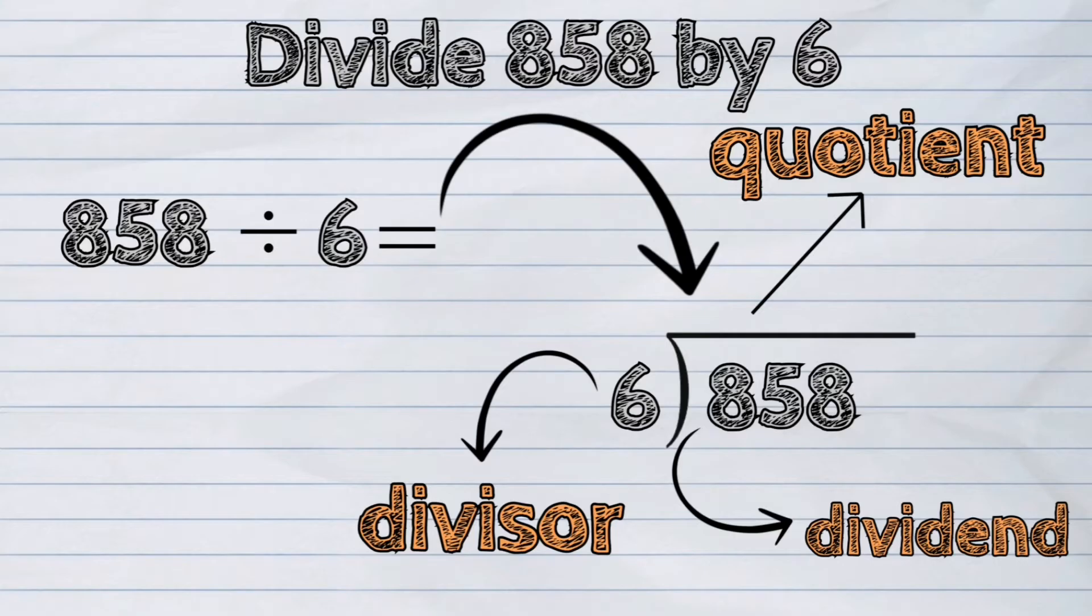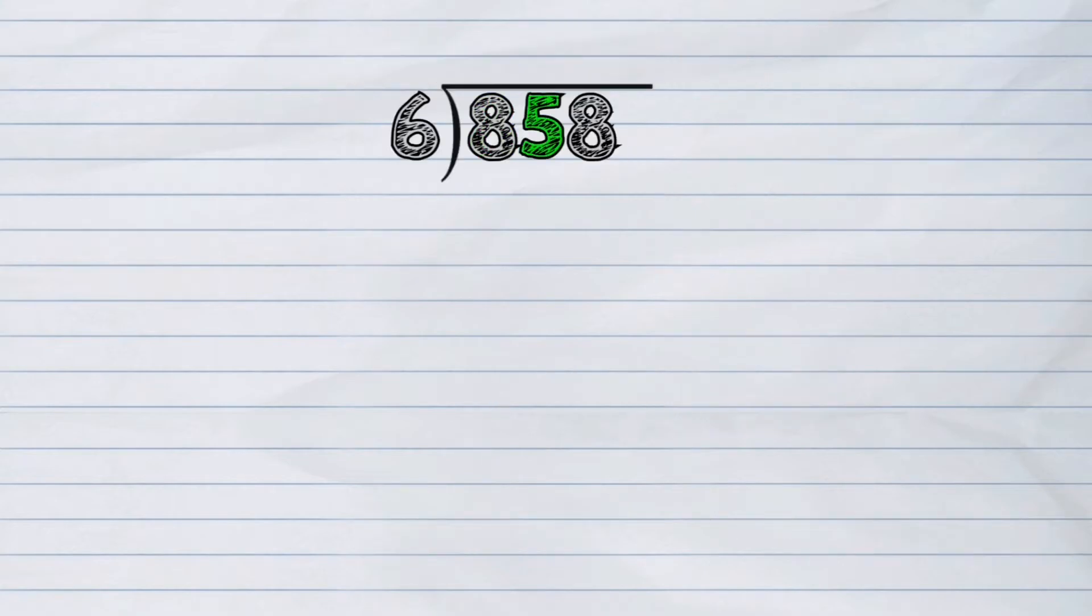In division, we start from left to right. So the first step is to divide. We should divide the first digit from the left, which is 8 hundreds by 6. How many times can you divide 6 into 8? The answer is 1. So we should put 1 in the quotient line.